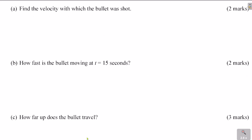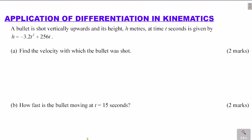Let's go to the first part. For the first part, you require to calculate the velocity with which the bullet was shot. What you're given here is the expression for the height: h equals negative 3.2t squared plus 256t.